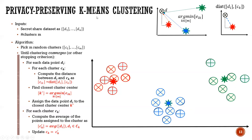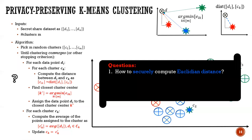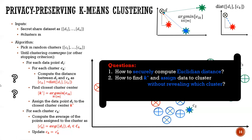There are key questions we need to address in privacy-preserving clustering. The first is how to compute the Euclidean distance efficiently over shared values. The second is how to compute k*, the index of the minimum distance cluster, and how to assign the data point to the corresponding cluster. The last question is how to obliviously update the cluster centers.